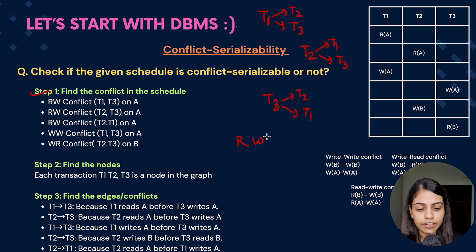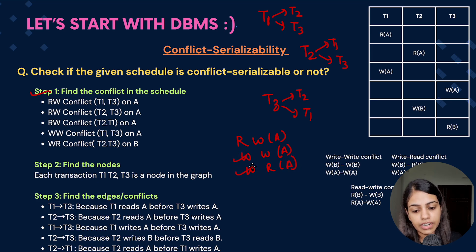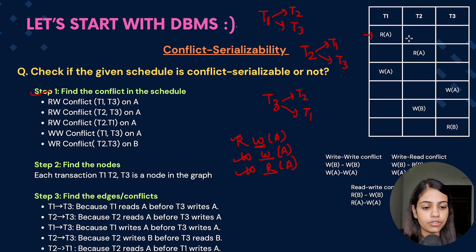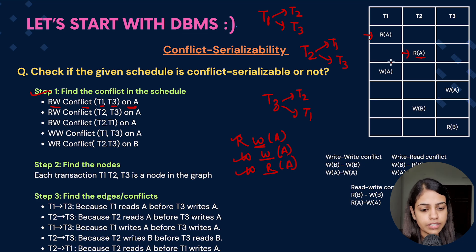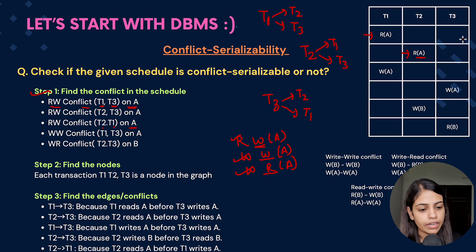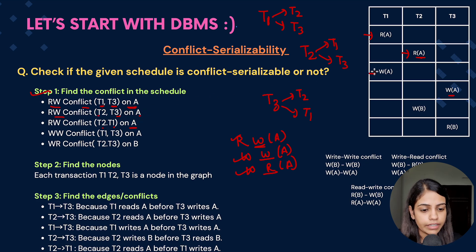The possible conflicts are read-write, write-write, and write-read on the same data item. For a write operation in a transaction, we check for both write and read operations on the same item in other transactions; for a read operation, we only check for write operations. The first operation is read-A in T1 — checking T2 and T3, there is a write-A in T3, so there is a read-write conflict between T1 and T3 on A. For read-A in T2, there is a write-A in T1 giving a T2→T1 conflict, and a write-A in T3 giving a T2→T3 conflict on A.